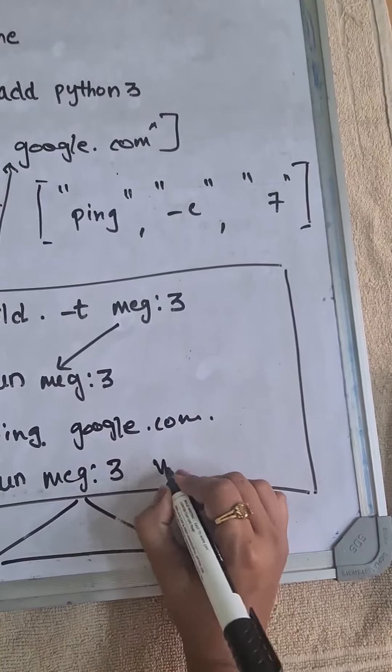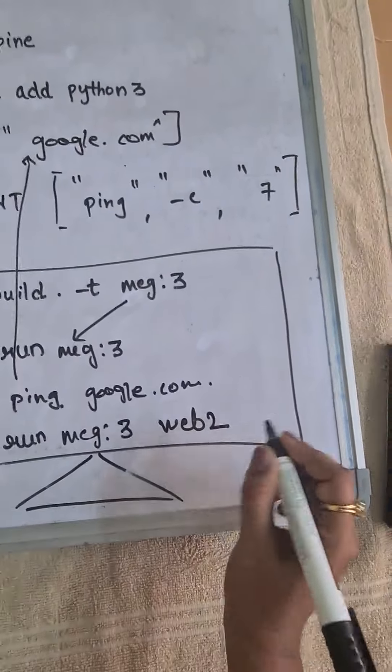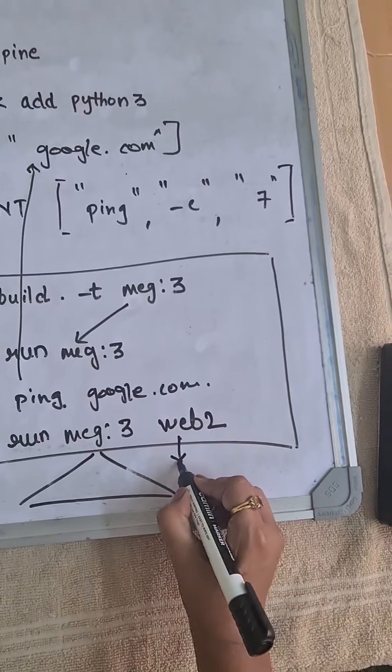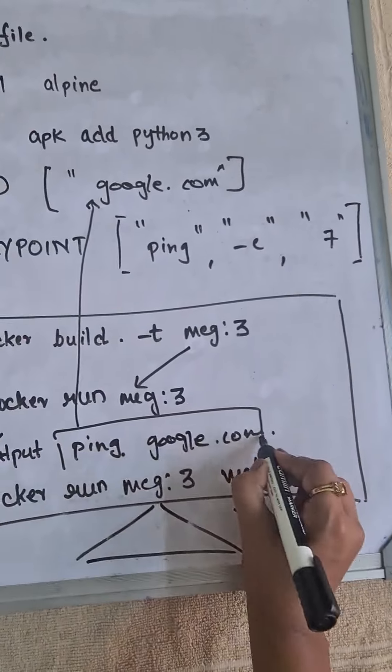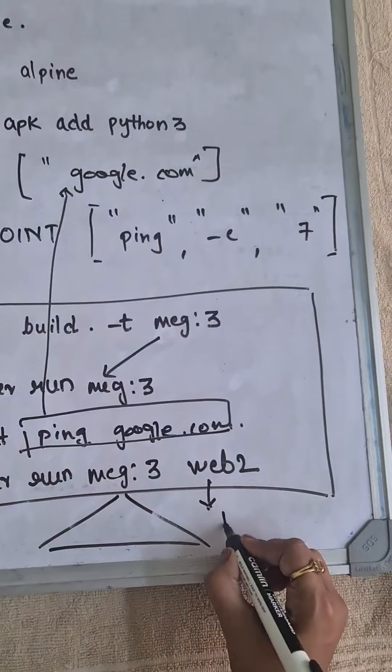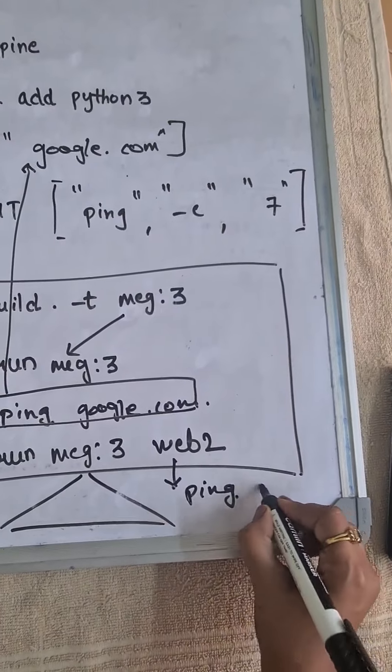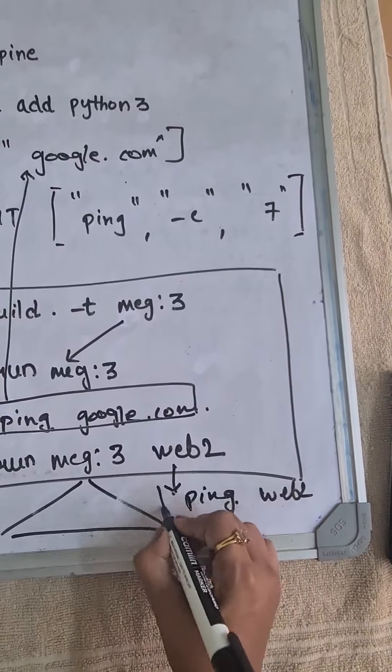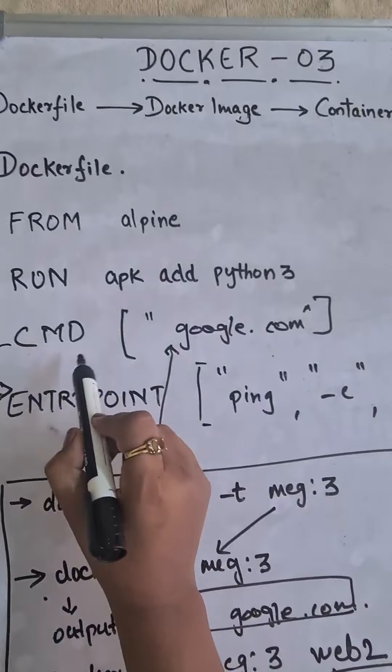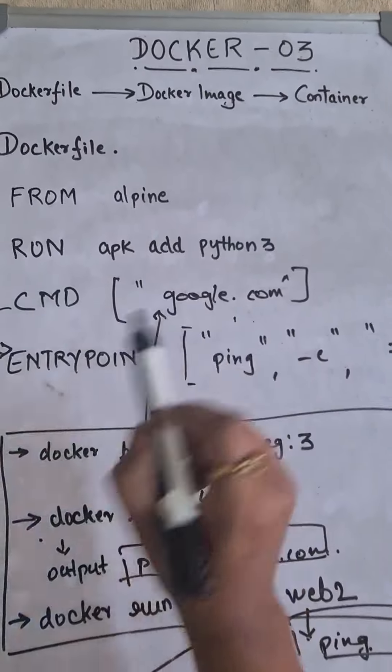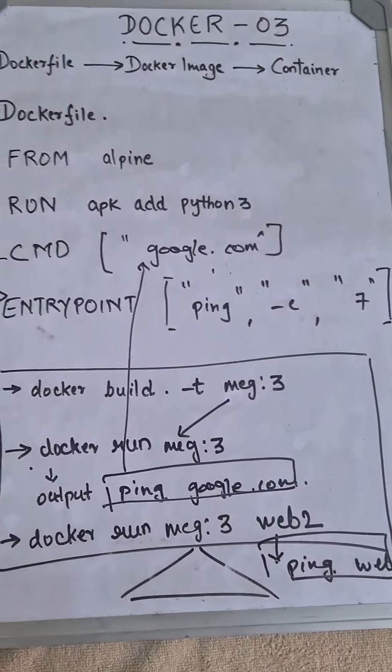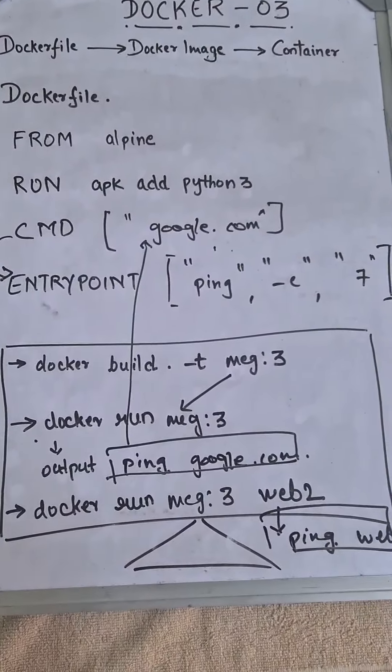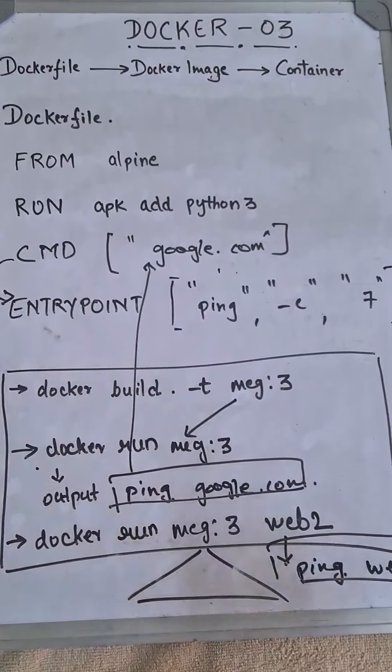So any random, let's say web2. So now the output of this command will not be ping google.com. It will be ping web2. So we have actually overridden the argument that has been passed here. So this is also one use case of using CMD, RUN, and ENTRYPOINT.